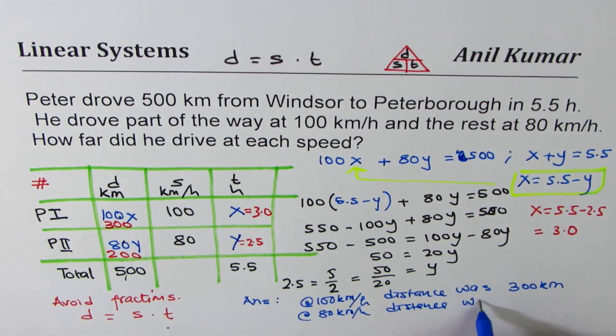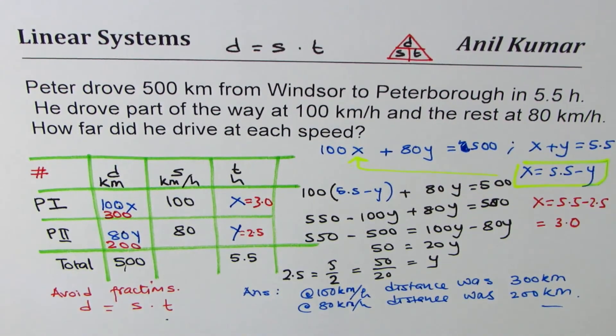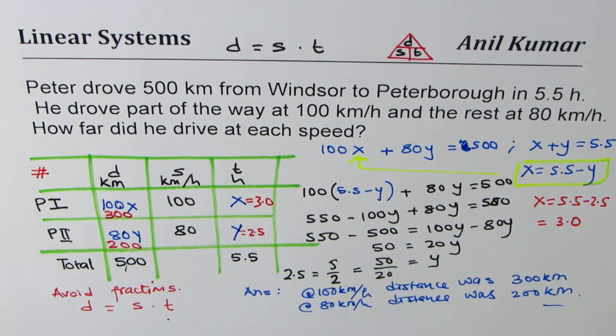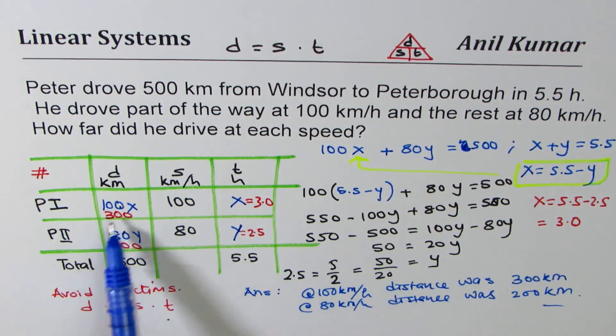In this particular solution we avoided fractions by defining time as our variable. But remember, to get distances you need to ultimately multiply this time with speed to get distance. I hope that helps. I'm Anil Kumar. You can share my videos and feel free to write suggestions. Thank you and all the best.